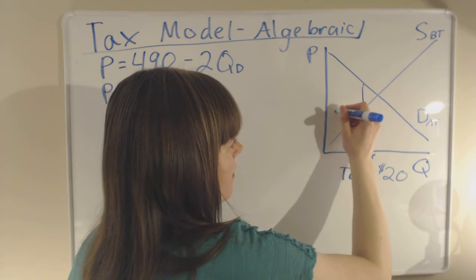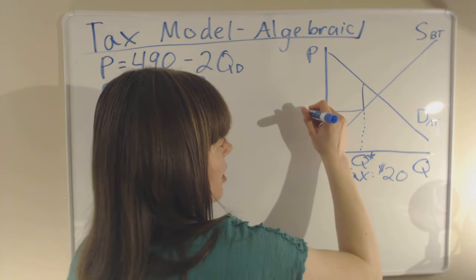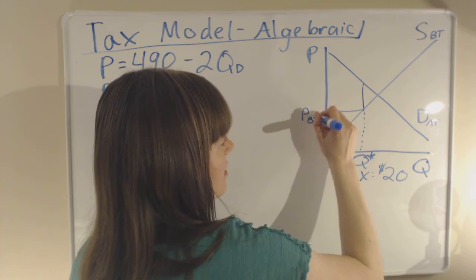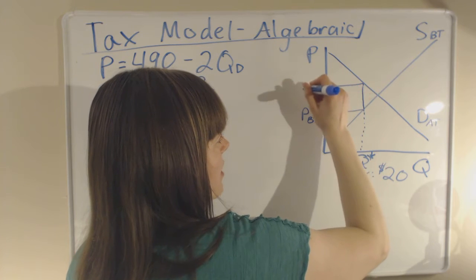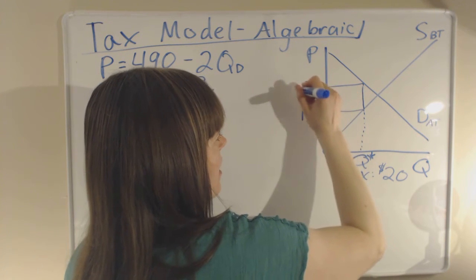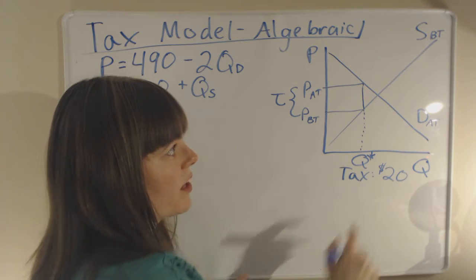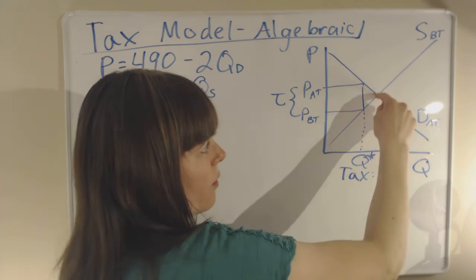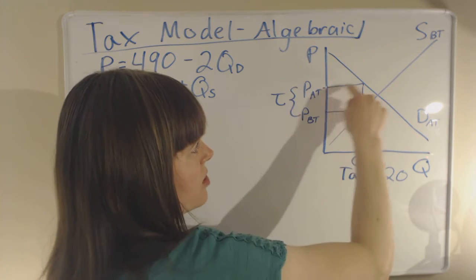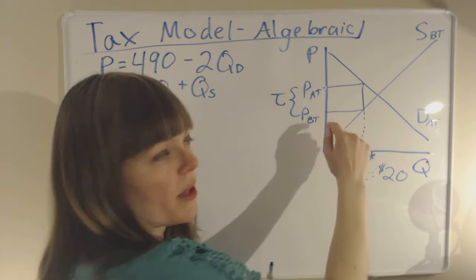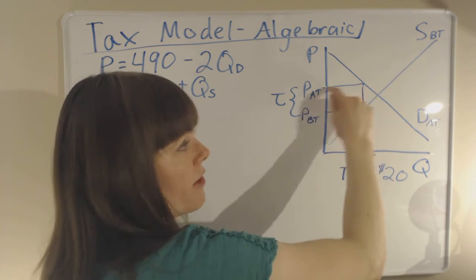And so we have our before-tax price, price before tax. We have our after-tax price, price after tax. And the difference is exactly equal to the tax. In this case, that's $20. In which case, we'll have dead weight loss here. We'll have our consumer surplus, our producer surplus, and our government revenue.